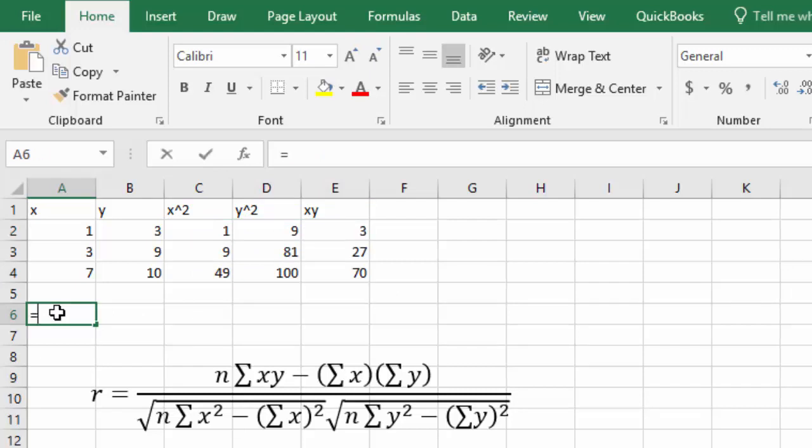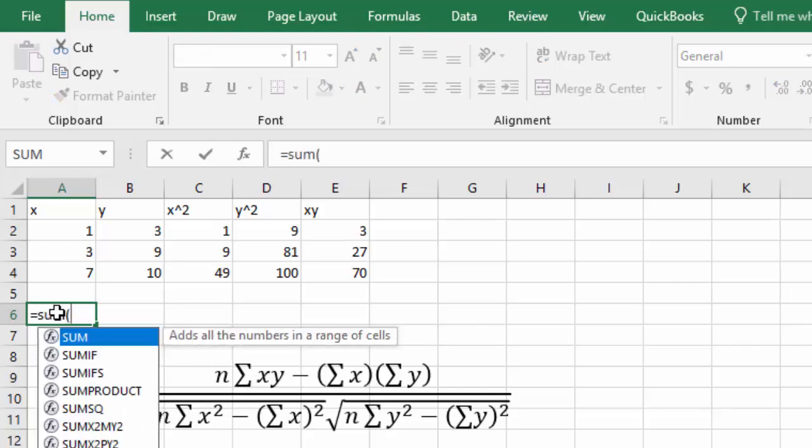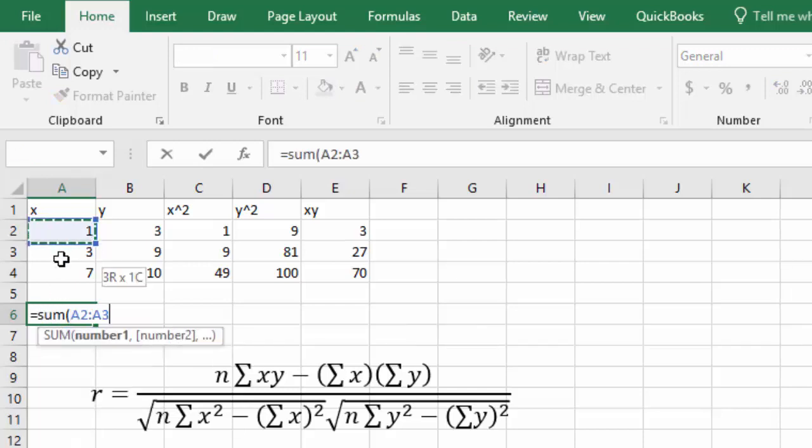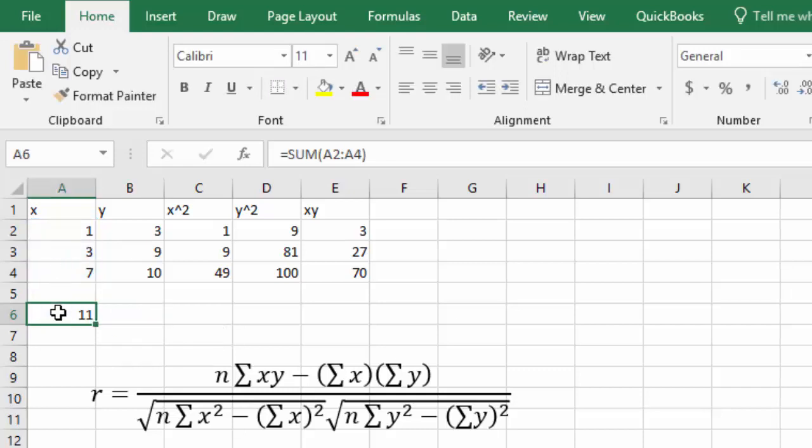Now all I need to do is calculate my sums. I can say equals sum, open a parenthesis, and select my x values, and that's going to give me the sum of all the x's. Again, I can click that dot in the bottom right corner, and as I stretch it across, it's going to find the sum of all of those pieces.